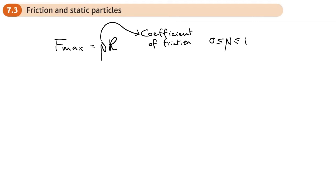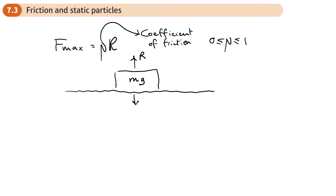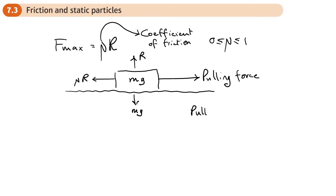For something to move, the pushing force needs to exceed f_max. If we have something on a flat surface with weight mg, a normal reaction R, and a force pulling horizontally, it will only start to move if that pulling force is greater than mu R. If the pulling force is greater than mu R the object starts accelerating; if it's less than or equal to mu R, it won't move.